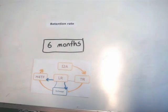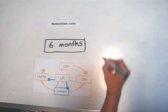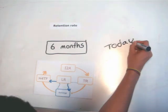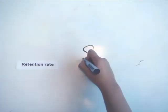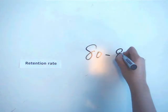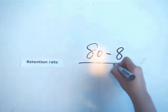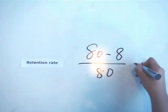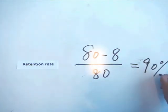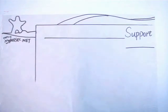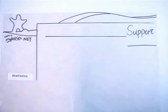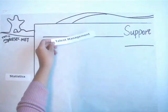The retention rate is calculated for a six-month period. For example, if you want to know your retention rate today and you recruited 80 people six months ago and eight have left ISAAC since, your retention rate today is 90%. You can also find out this number on myisaac.net.